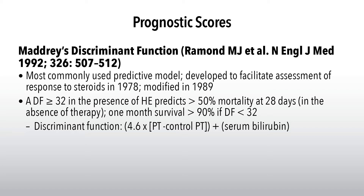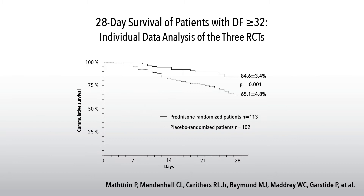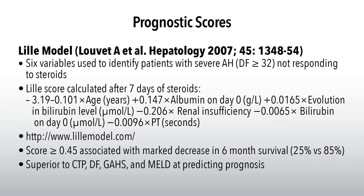The Maddrey discriminant function looks at PT versus control and serum bilirubin to produce a DF value. In the presence of hepatic encephalopathy, a DF score can indicate greater than 50% mortality at 28 days in the absence of therapy. One-month survival is excellent — over 90% — if the DF is under 32. With a DF over 32, the 28-day mortality rate is approximately 30%.